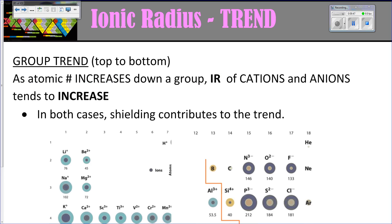As you go down a group, as your atomic number increases, the ionic radius is going to increase. In both cases, the reason this is happening is shielding. As you go down the group, you've got more energy levels between your valence electron shell and your nucleus.